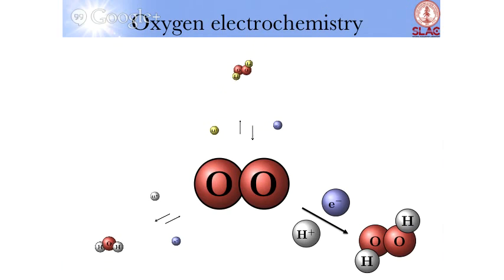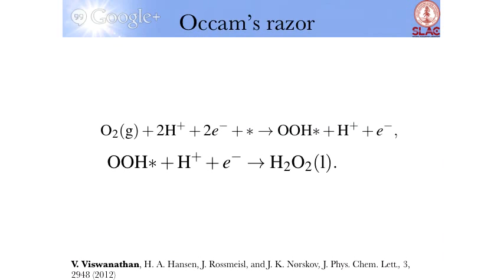What I tried to do was see what takes you from oxygen to hydrogen peroxide. You have one intermediate in the problem: you have oxygen, two protons and two electrons, you form OOH, which then you add another proton and electron, you form hydrogen peroxide. Now, can we try and understand this process?